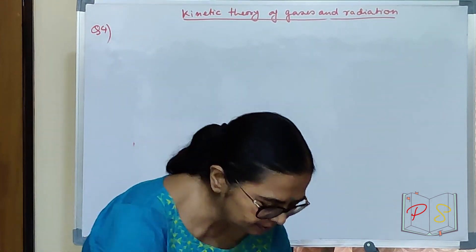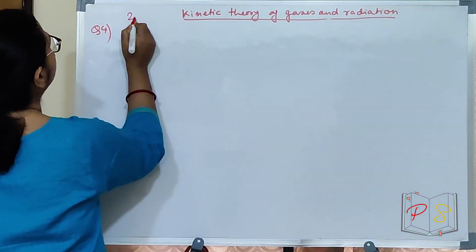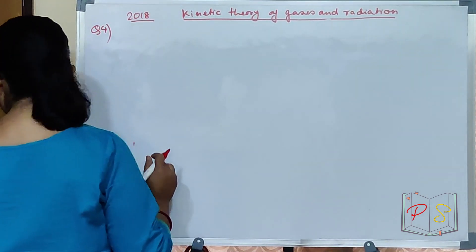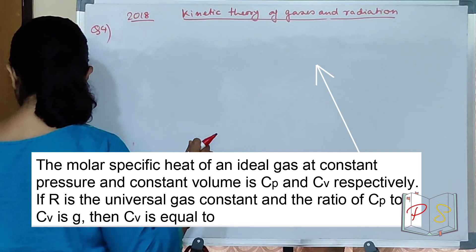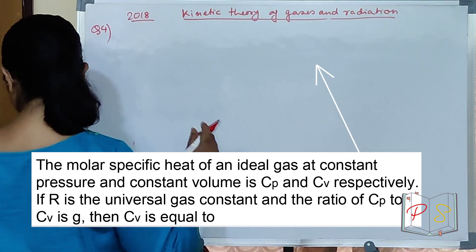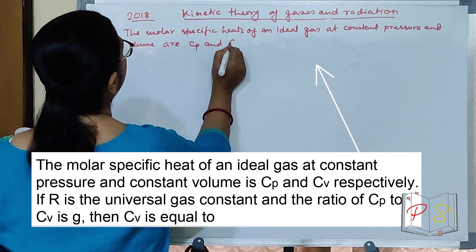This question came in 2018. The molar specific heat of an ideal gas at constant pressure and constant volume is Cp and Cv respectively.